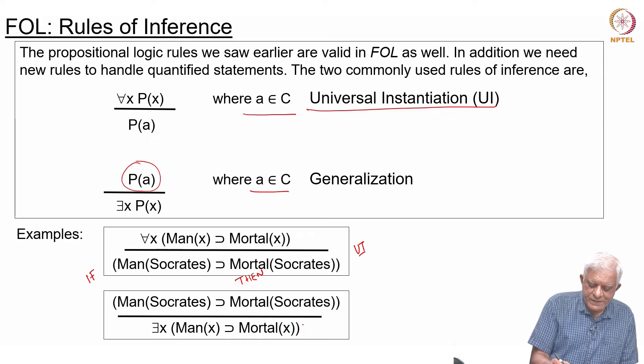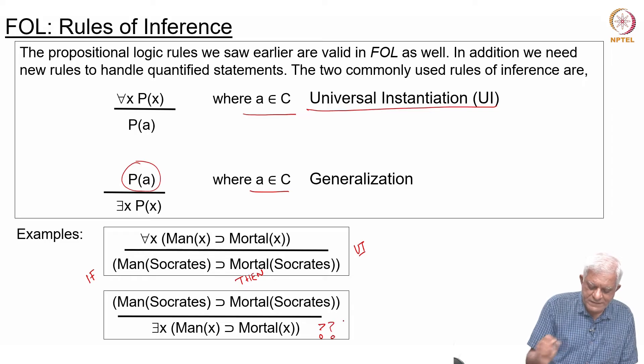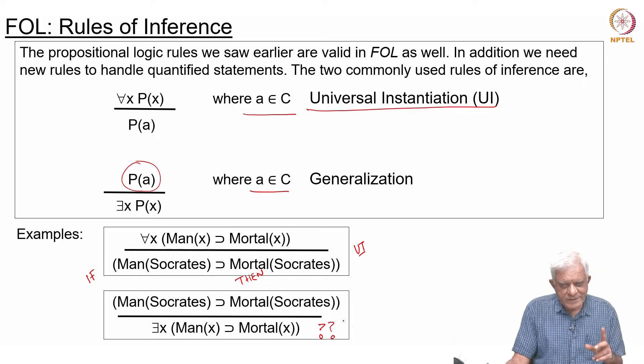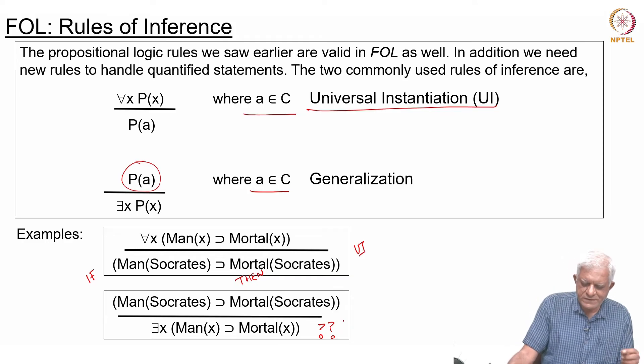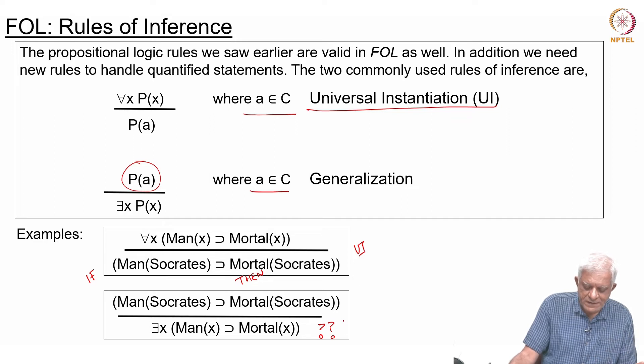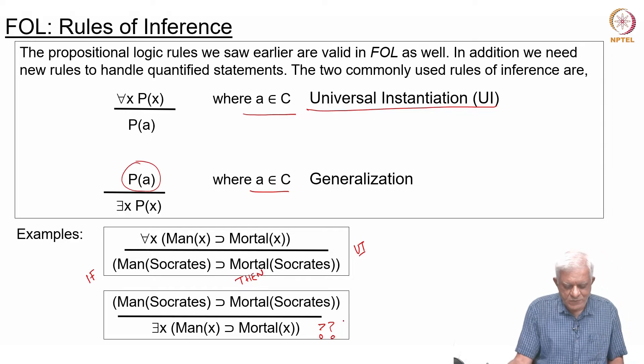Now notice—and I will leave this as a small thing for you to ponder over—what is this sentence saying essentially? It's not saying some men are mortal, because we kind of hinted that we have to use the AND sign here. But nevertheless, this is just the illustration of the rule of Generalization, which is that if this holds, then this other thing will also hold.